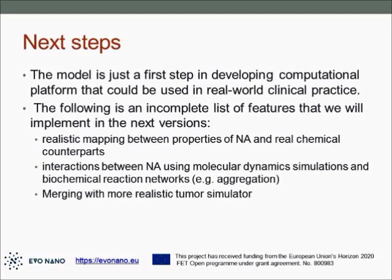Next steps are to make the simulation more realistic. We have several immediate plans: first, to implement more realistic mapping between properties of nano agents and their real chemical counterparts; second, to implement interactions between nano agents, because right now they are ignorant of each other; and third, to merge this simulation with a more realistic tumor simulator to see what can really happen in that situation. Thank you.